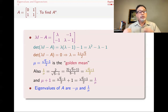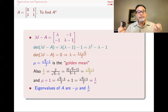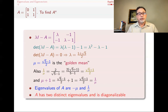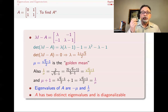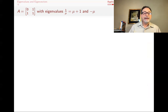Because A has two distinct eigenvalues, each one has an eigenvector, and those eigenvectors are automatically linearly independent from each other — we proved that in a previous video. So A is diagonalizable: we can find two linearly independent eigenvectors. Now we have this matrix A with its two eigenvalues, and we want to actually carry out the diagonalization.